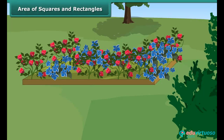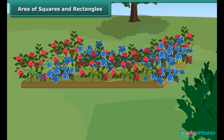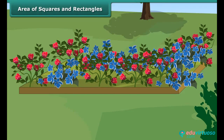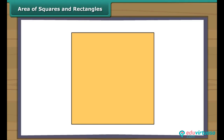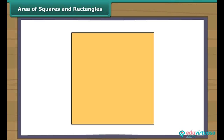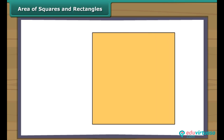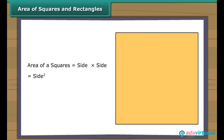Area of squares and rectangles. Students, can you identify the shape of the flower bed in the park? It is the shape of a square. A square is a four-sided closed figure with equal measures. Can we find the area inside the flower bed? Yes. If we have the measure of any one side, we can find the area. The area of a square is the square of its side.